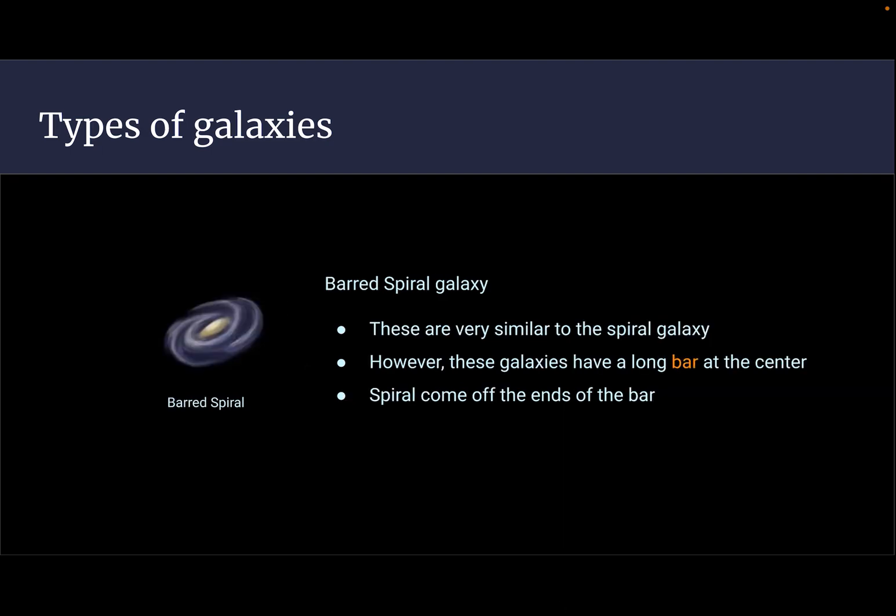The barred spiral galaxy is very similar to the spiral galaxy. However, these galaxies have a long bar at the center. The spirals come off the ends of the bar.